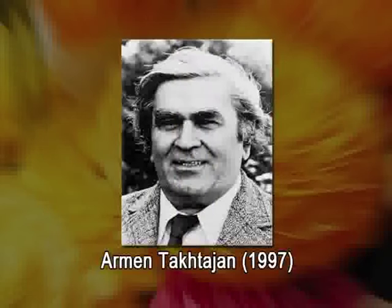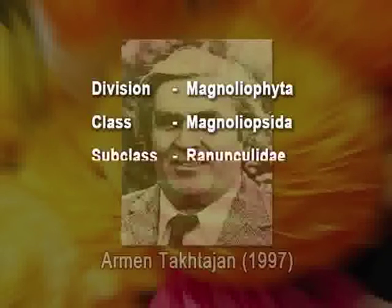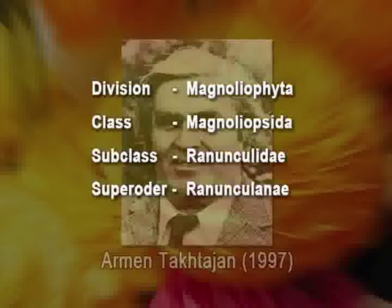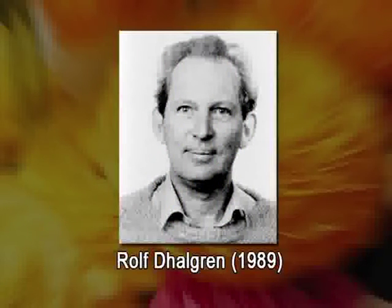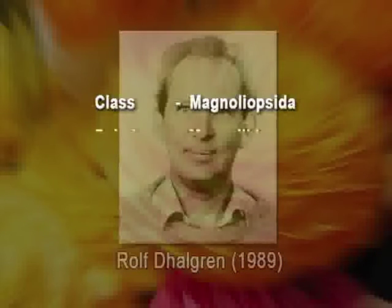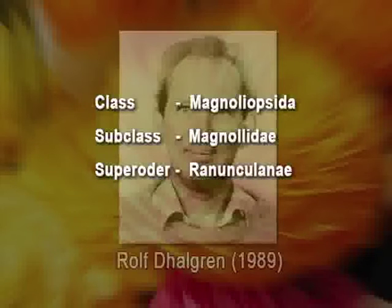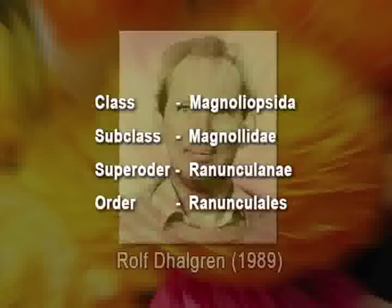Armin Takhtajan, a famous Russian taxonomist, classified it under the division Magnoliophyta, class Magnoliopsida, subclass Ranunculidae, superorder Ranunculanae, and order Ranunculales. Dahlgren, a Danish botanist, classified it under the class Magnoliopsida, subclass Magnoliidae, superorder Ranunculanae, and order Ranunculales. Robert Thorne, an American taxonomist, again classified it under the class Angiospermae, subclass Ranunculidae, superorder Ranunculanae, and order Ranunculales.